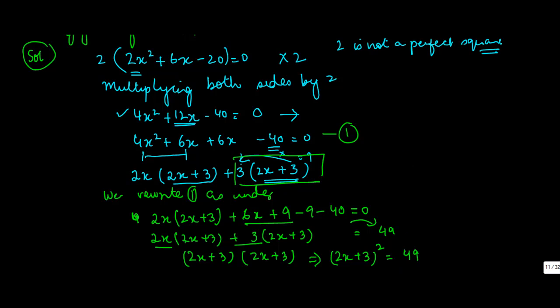Which implies that 2x + 3 = ±7, because the square root of 49 is ±7.